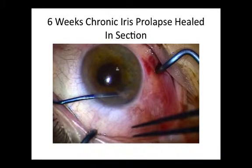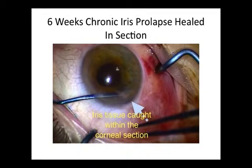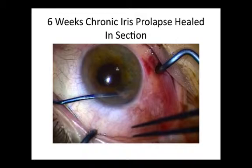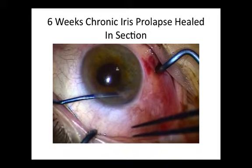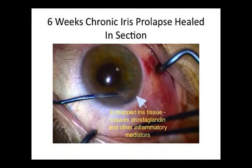In this case, which was referred with an old iris prolapse caught within the corneal section, the patient was suffering from chronic cystoid macular edema. It is always important to address any potentially precipitating causes of cystoid macular edema, such as iris prolapse incorporated within the corneal section, which can act as a source of prostaglandin production by releasing arachidonic acids and other pro-inflammatory mediators.